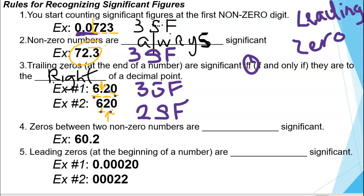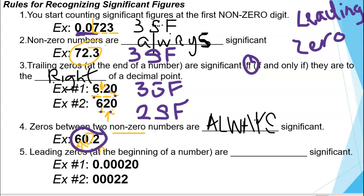Rule number four: zeros between two non-zero numbers are always significant — always. Here we have a zero sandwiched between a 6 and a 2. We know that zero is significant because it's between two non-zero numbers. So every digit here is significant, and we have three significant figures.